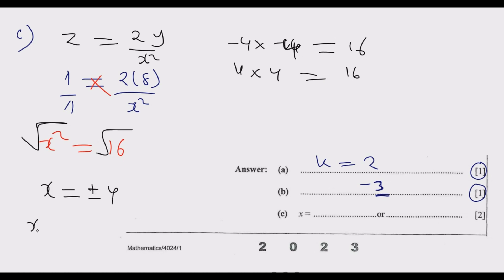So x equals positive or negative 4. We have negative 4 or 4. Once you do that, you get the two marks and you're good to go.